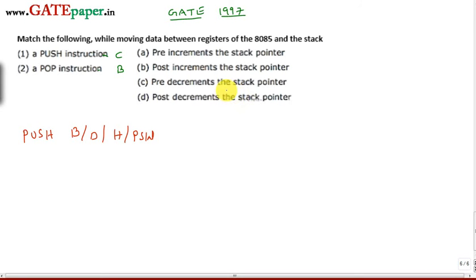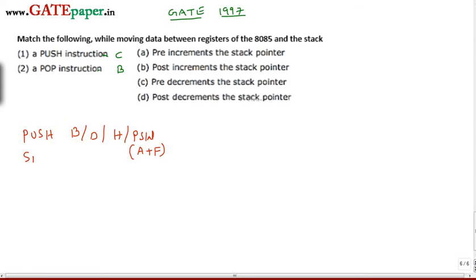Similarly, the contents of register pair DE or register pair HL are pushed into the stack. PSW means program status word — it is a 16-bit register. The upper 8 bits are the accumulator and the lower 8 bits are the flag register. Let us assume the stack pointer is at 0FFF.